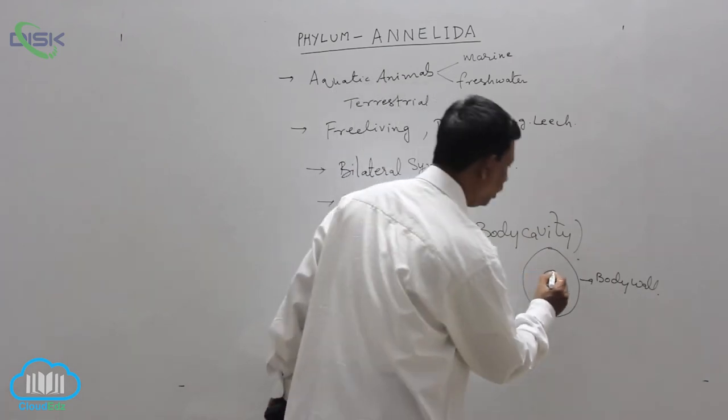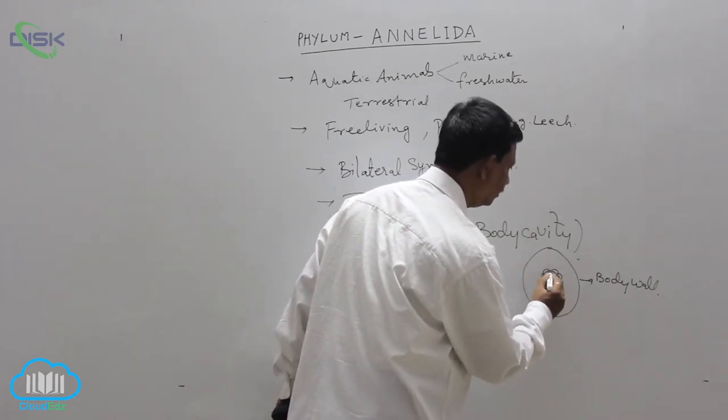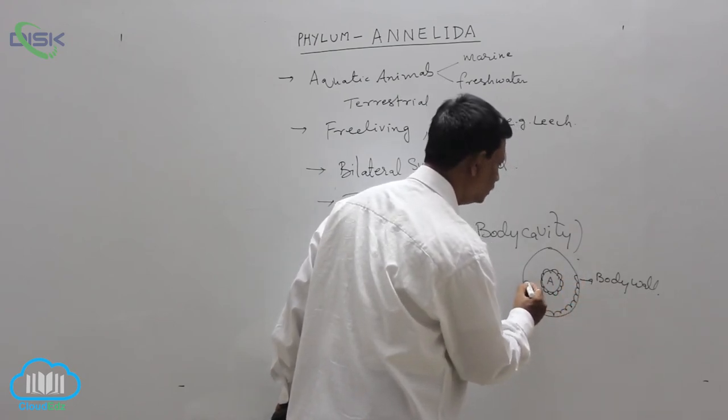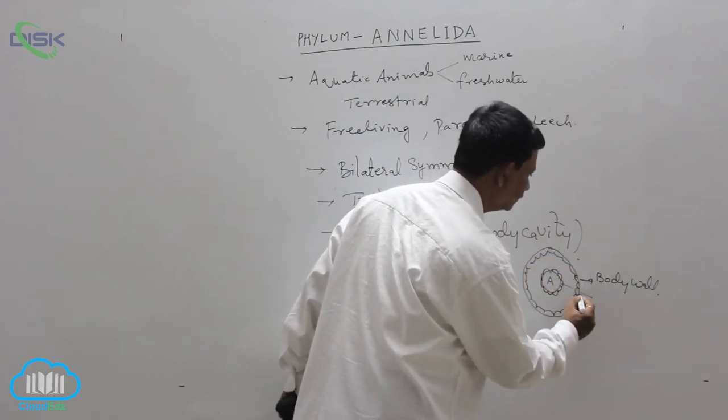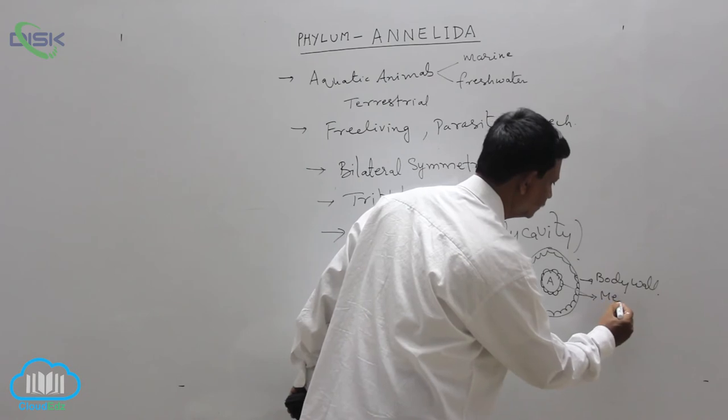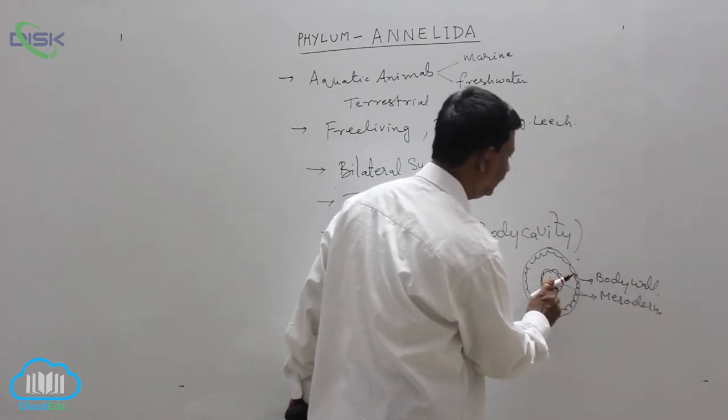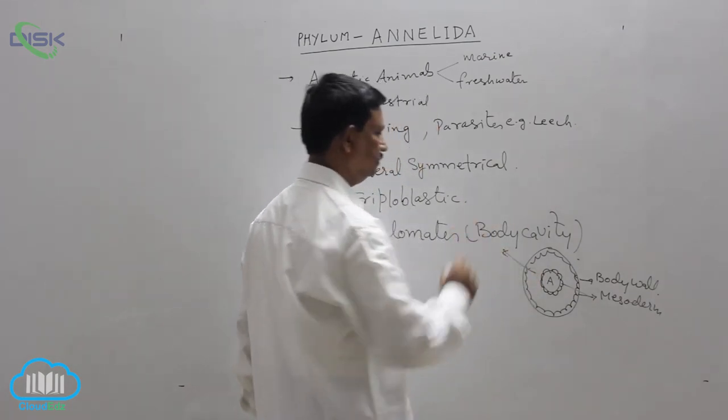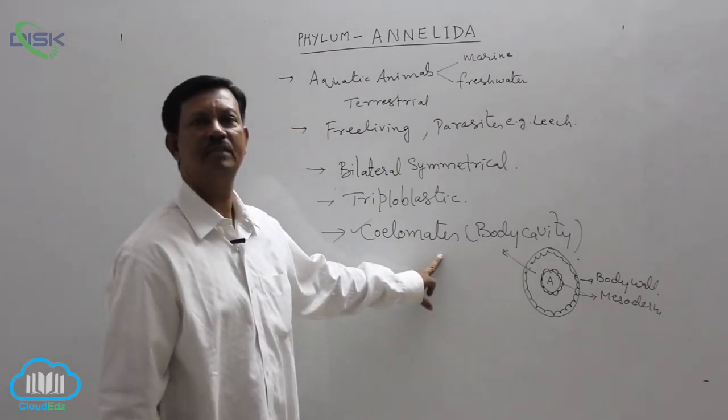In between these two, outer layer of the alimentary canal and inner layer of the body wall is derived from the mesoderm. In between these two, body wall and alimentary canal, cavity is present that is known as the body cavity. It is true coelom due to being derived from the splitting of the mesoderm.